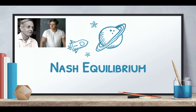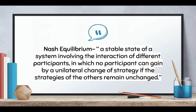There was a movie about John Nash, who came up with a lot of these ideas. It focused on him having schizophrenia, but he was a very well-regarded mathematician. We're going to talk about something called the Nash Equilibrium. Its definition is: a stable state of a system involving the interaction of different participants in which no participant can gain by a unilateral change of strategy if the strategies of the others remain unchanged.